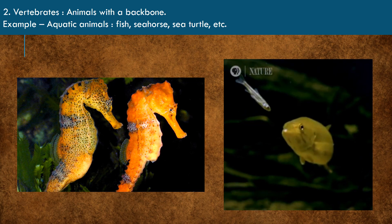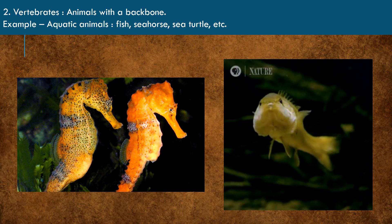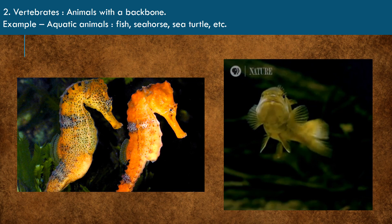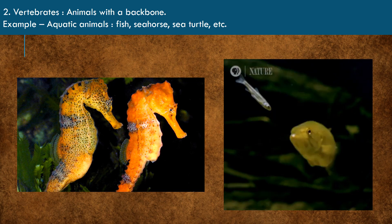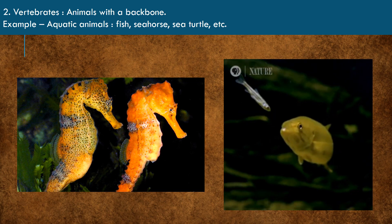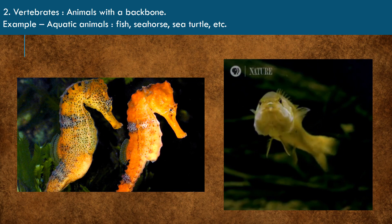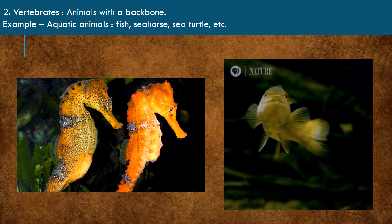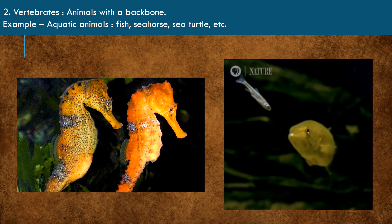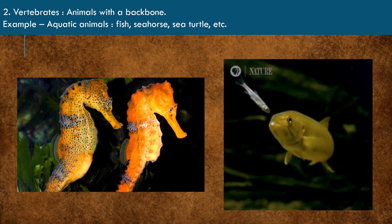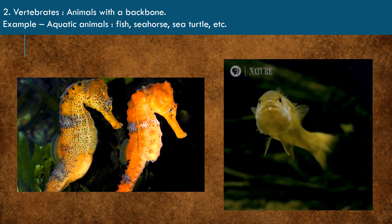Animals with a backbone are called vertebrates. Vertebrates are classified into the following categories. Aquatic animals: animals that live in water for most of the time are called aquatic animals. For example, fish, seahorse, sea turtle, etc.